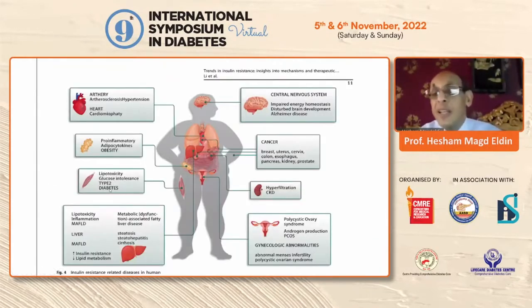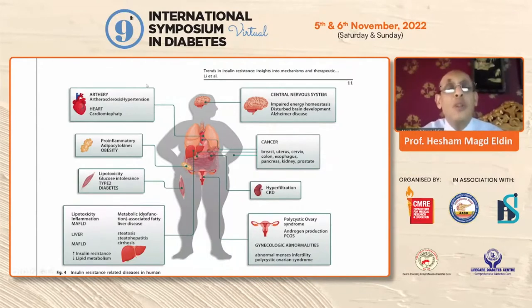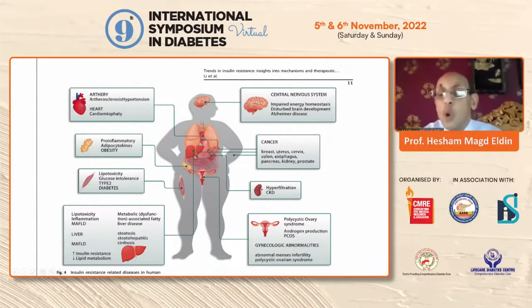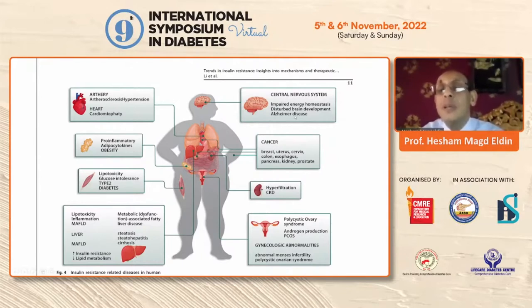The clinical presentation varies between people. Some will have only obesity, while non-obese people can also have insulin resistance. It can also manifest as cardiovascular problems, hypertension, type 2 diabetes, and metabolic-associated liver disease. Other associations include cancer in different organs, hyperfiltration in the kidney, and polycystic ovary syndrome. More recently, there is what is called central insulin resistance, implicated in impaired energy homeostasis, brain development, memory function, and Alzheimer's disease — sometimes called type 3 diabetes.